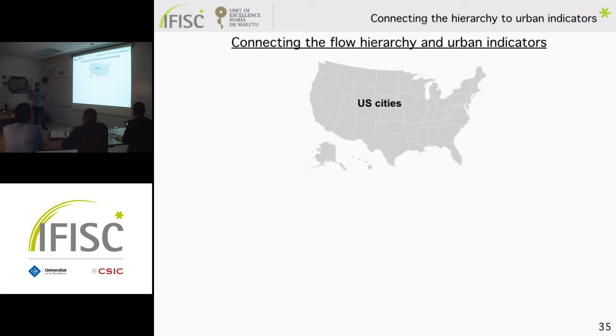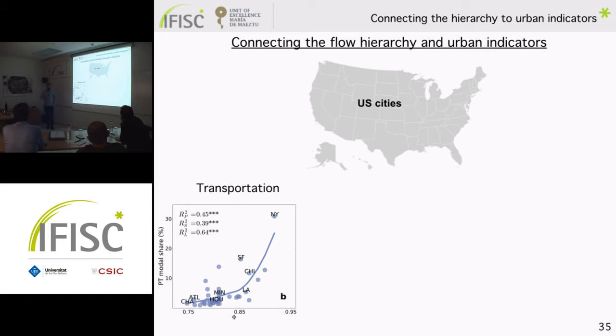The next question is whether this hierarchical organization of mobility relates to how people move in cities — perhaps the transportation modes they use. We first test this for US cities, which have homogeneous boundary definitions and consistent urban indicators. Here I show the modal share of commuting trips by public transportation as a function of this flow hierarchy φ. There is a trend suggesting that cities with a more hierarchical structure have a higher use of public transportation, and in the thesis I also show the inverse relation for cars.